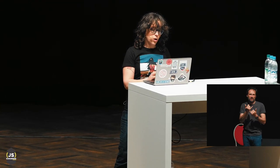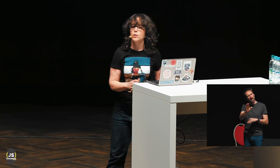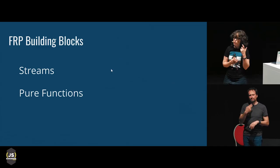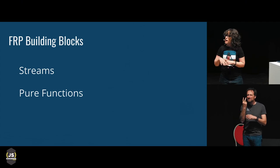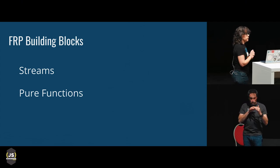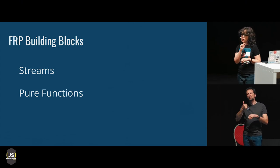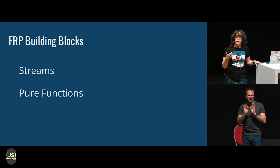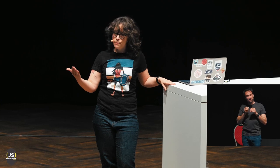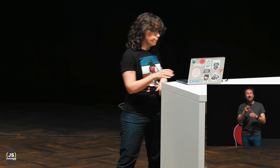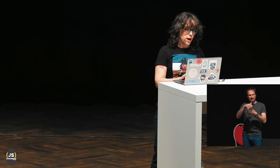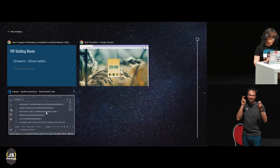Before we look at the code, let's talk about the two main building blocks of FRP, which are streams and pure functions. Streams are a type that emits values over time — that means a stream is characterized both by the values it emits and by when it emits them. In RxJS, they're called observables, and we can actually see one in the wild in our code.